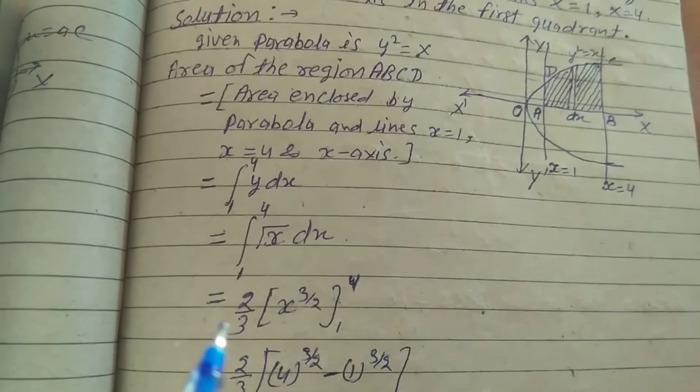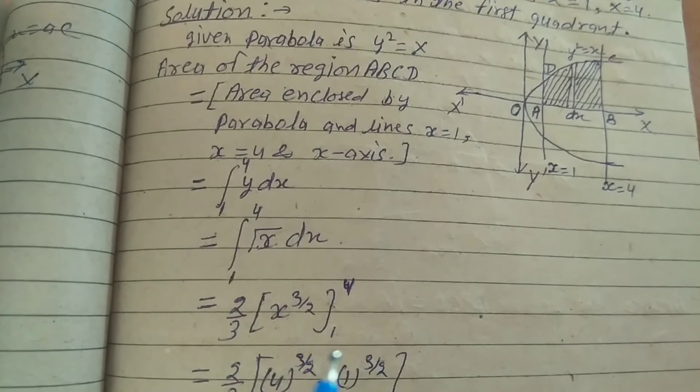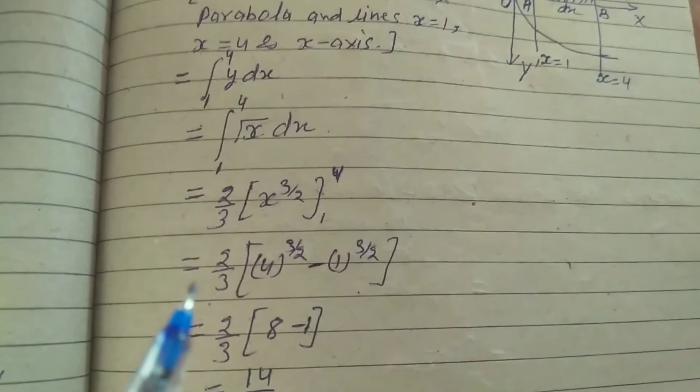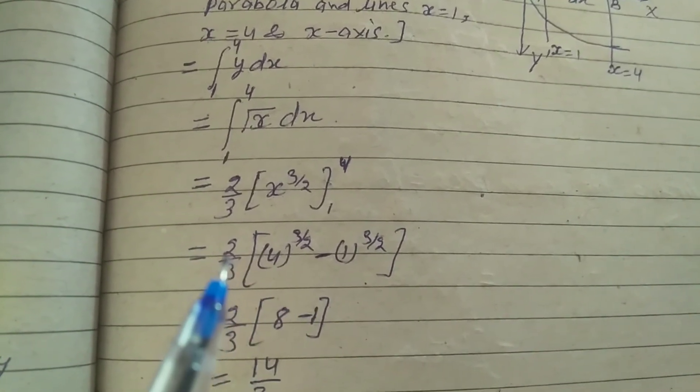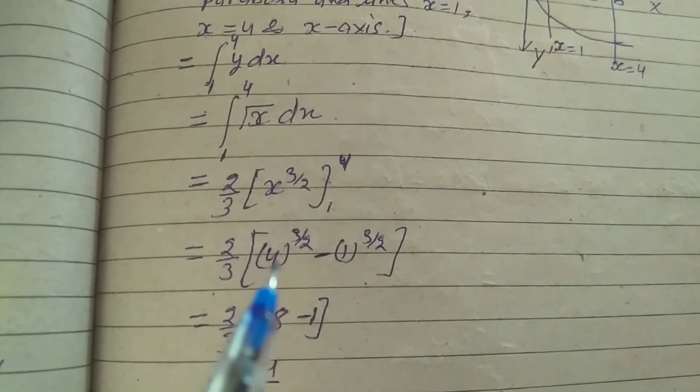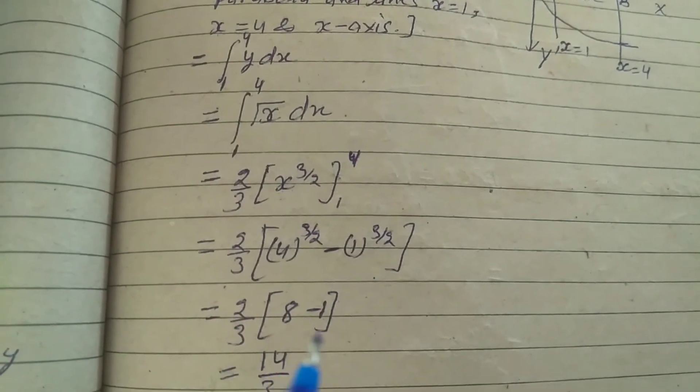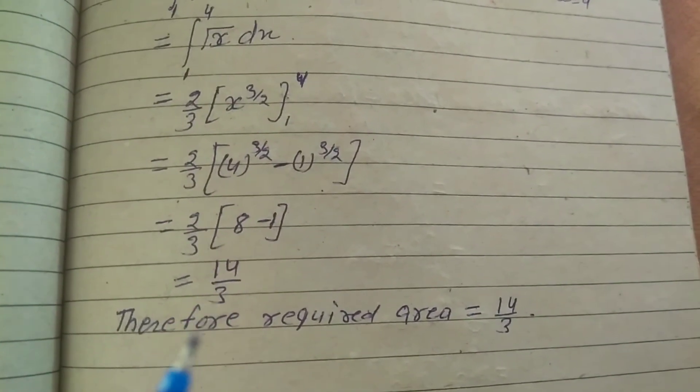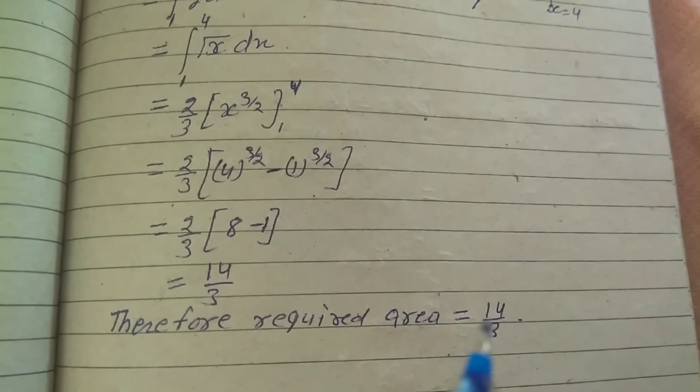Integration of root x is 2 by 3 x^(3/2), limit is 1 to 4. Upper limit minus lower limit, 2 by 3 times (4^(3/2) - 1^(3/2)), equals 2 by 3 times (8 - 1), equals 14 by 3. Therefore, required area equals 14 by 3.